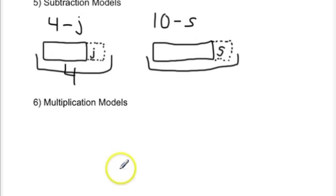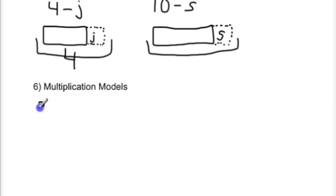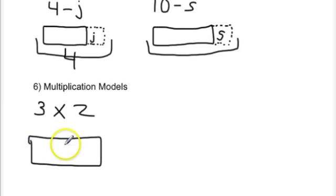If we're doing a multiplication model, for example, if we had the algebraic expression three times Z or 3Z, we would, again, show in this model by starting with our rectangle, and then we would show that Z is going to be represented three times. So we would divide this into three parts.